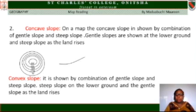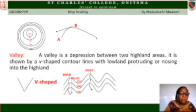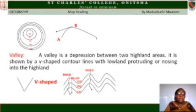Convex slope is shown by a combination of steep slope at the lower ground and gentle slope as the land rises. From the diagram, you can see that the lines are close together at the lower ground and widely spaced higher up. This is the shape of a convex slope — somebody at point B cannot see somebody at point A.